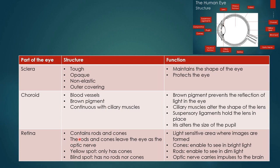The retina contains rods and cones. The rods and cones leave the eye as the optic nerve. The yellow spot only has cones, and the blind spot has no rods nor cones. The retina is a light-sensitive area where images are formed. Cones enable you to see bright light, rods enable you to see dim light, and the optic nerve carries impulses to the brain.